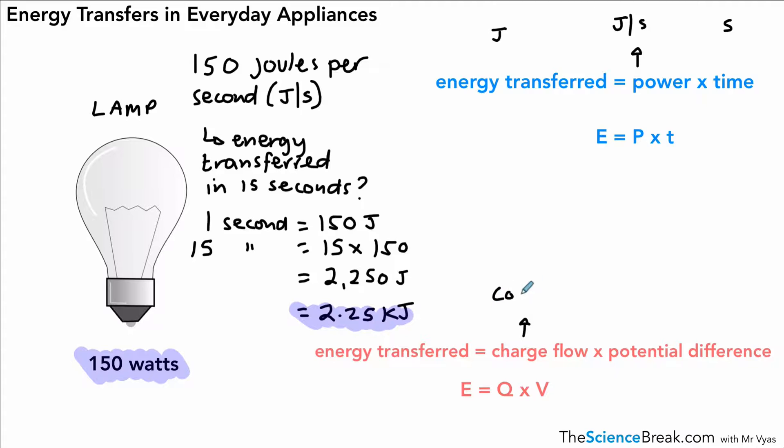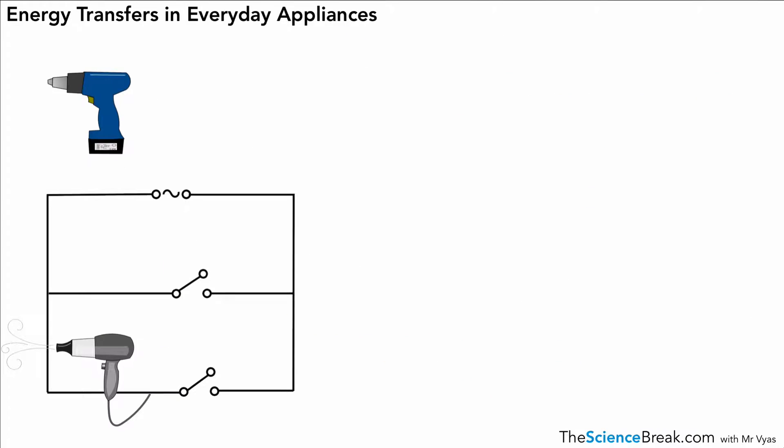And the second equation is energy transferred is charge flow, measured in coulombs, times potential difference. Now if we remember that potential difference actually means energy per coulomb, so potential difference measured in volts actually means the same thing as energy per coulomb, it might make sense that energy transferred is the number of coulombs times the energy per coulomb. But you have to remember, potential difference is measured in volts. It just means energy per coulomb. So we could use that in an equation, and if we knew the charge flow and we knew the energy per coulomb, we could work out energy transferred.